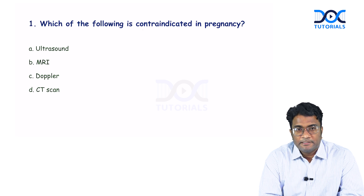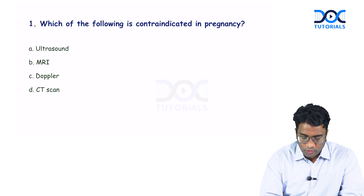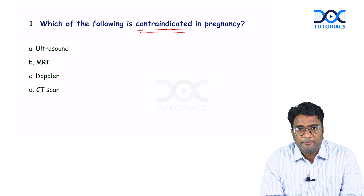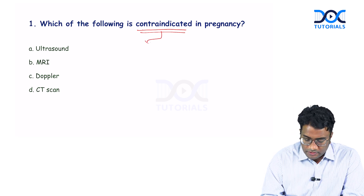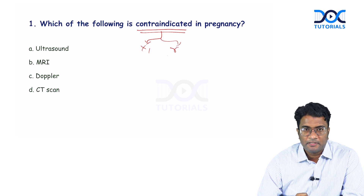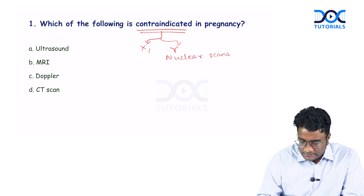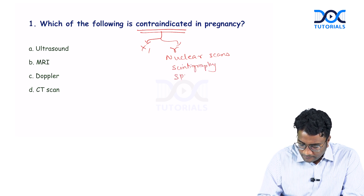This is an easy question. Ionizing radiations are contraindicated in pregnancy. These are investigations using X-rays and gamma rays. All nuclear scans use gamma rays — scintigraphy studies, SPECT studies, and PET scans.